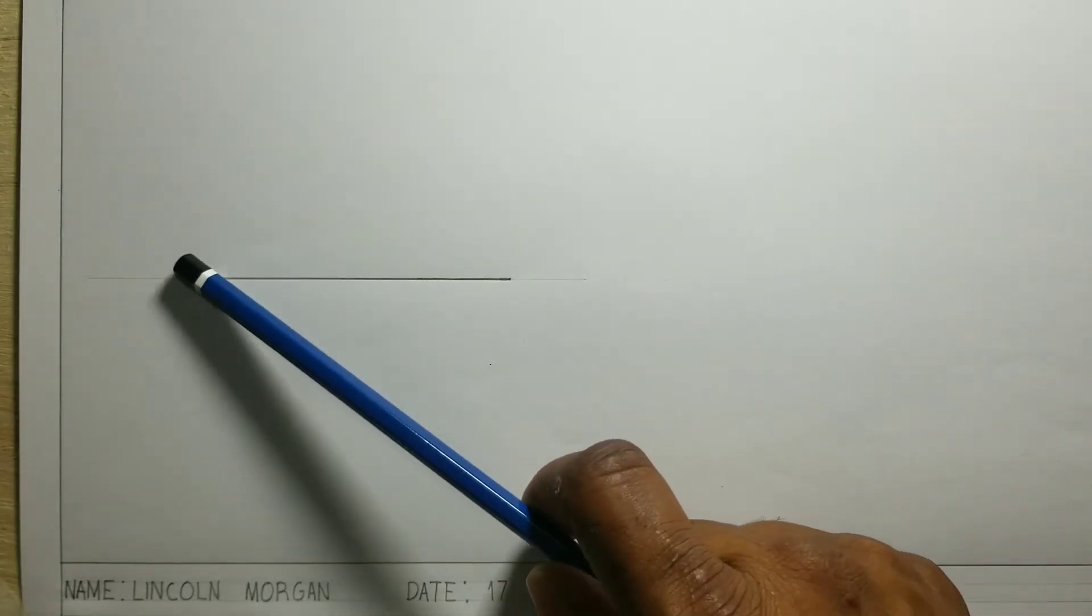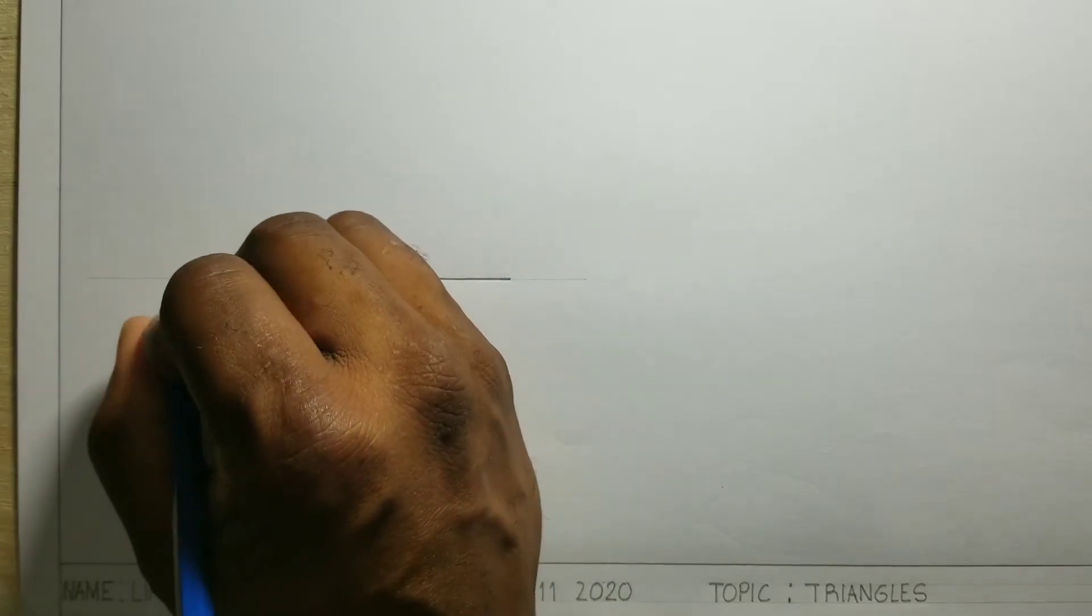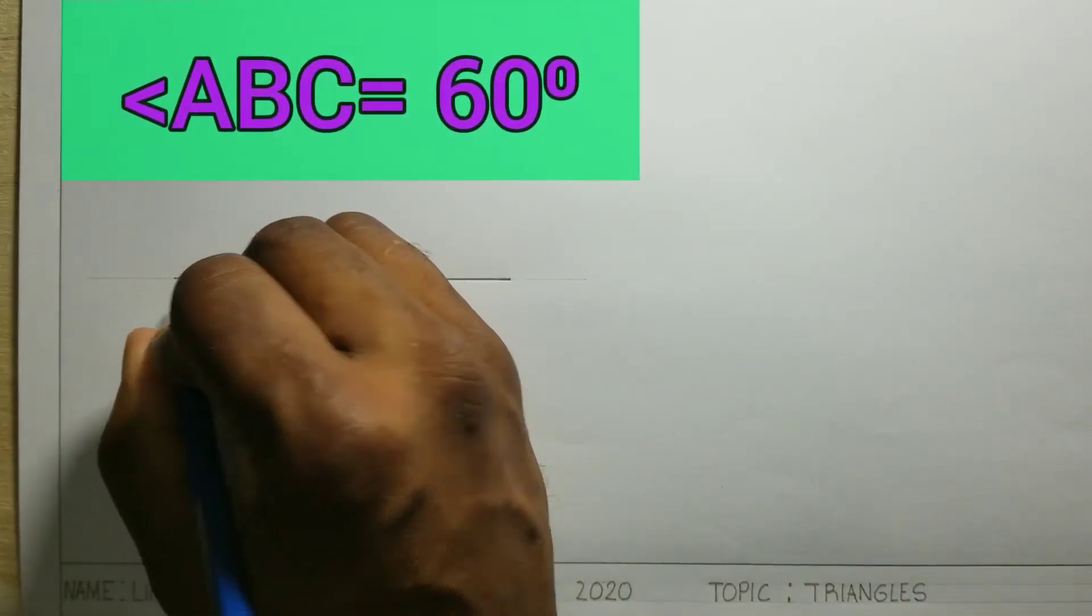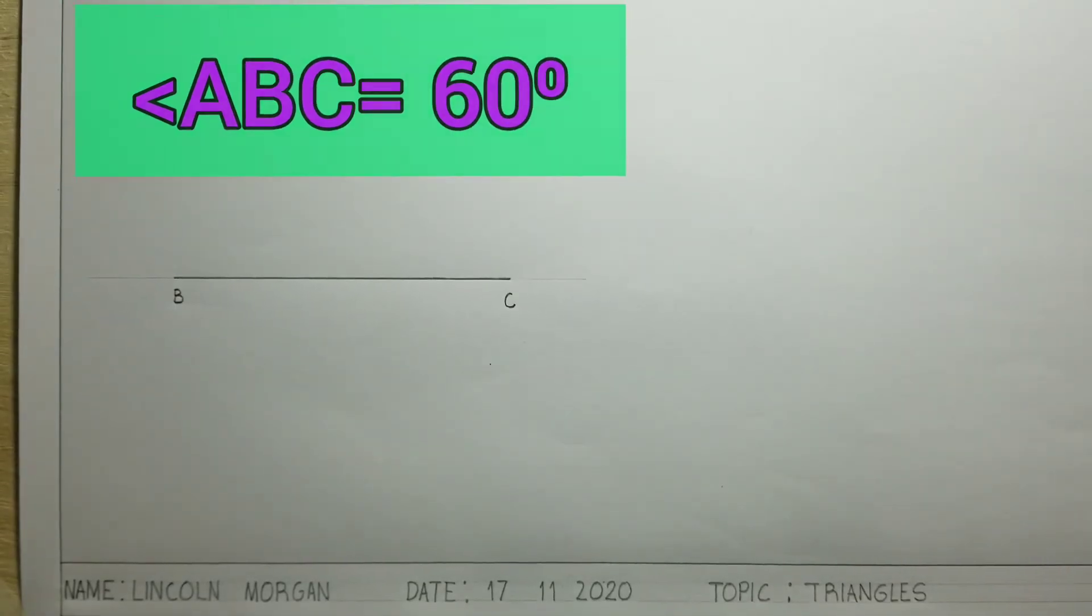I will now construct a 60 degree angle from B. In order to construct the 60 degree angle, open your compass.